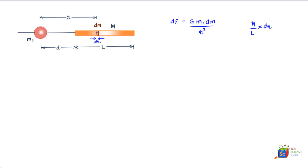Now if this is the case, we can substitute the value of dm over here, and we get that the small force df on account of the small section dm should equal G*m1/r² times M/L times dr.